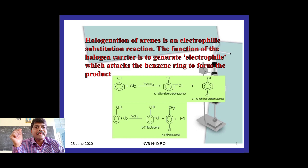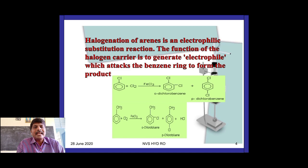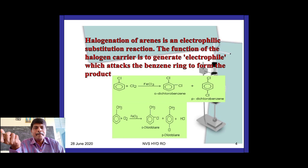If chlorobenzene reacts again with chlorine in the presence of a Lewis acid, the products are ortho-dichlorobenzene and para-dichlorobenzene; para is the major product because chlorobenzene is an ortho and para directing group. Similarly, toluene (methylbenzene) reacting with chlorine in the presence of a Lewis acid gives ortho-chlorotoluene and para-chlorotoluene.